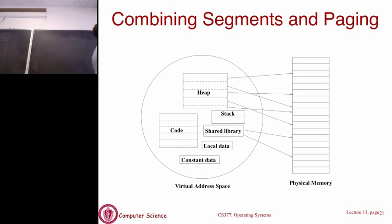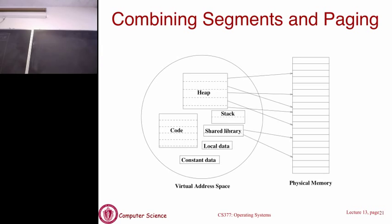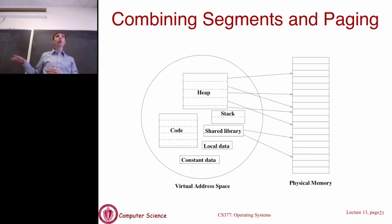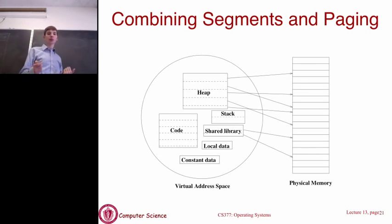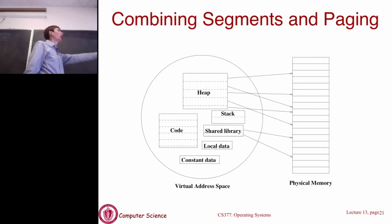In the virtual address space, rather than just an array of bytes, we have a collection of logical segments and offsets — that's what the compiler generates. In physical memory, each segment is paged, with each segment corresponding to multiple pages all mapped onto physical memory frames. So we don't need contiguous allocation in physical memory — it's still logically contiguous from the compiler's perspective, but not actually contiguous in physical memory. We're combining the OS view of memory as a linear array of bytes with the compiler view of logical segments.